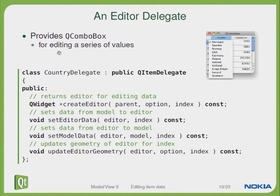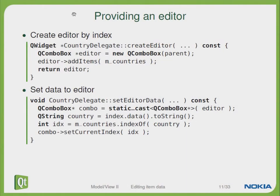Therefore we can derive our CountryDelegate from QItemDelegate and overwrite some functionality, like the function createEditor to create an instance of our editor. We can call the CountryDelegate createEditor function to create a new editor of type QComboBox and add the specific country strings into the combo box.